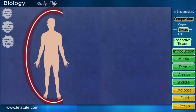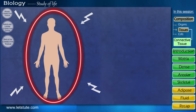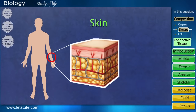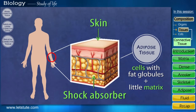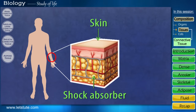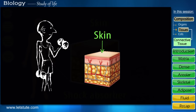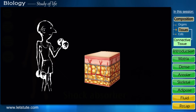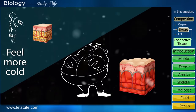Our precious body needs to be safe from mechanical shocks. To do this, there's a layer of tissue right beneath your skin which acts as a shock absorber. This special type of connective tissue is called adipose tissue — the cells here are filled with fat globules. Fun fact: thin people who have very little adipose tissue feel more cold compared to fat individuals, as this layer acts as an insulator.